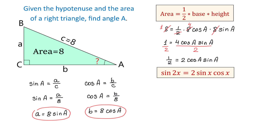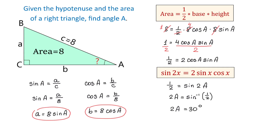Next, I will use the trigonometric identity: sine of 2A equals 2 cosine of A times sine of A. According to this identity, I can replace the right side with sine of 2A. So then I have one-half equals sine of 2A. From here, I solve for 2A: 2A equals inverse sine of one-half. Inverse sine of one-half is 30 degrees. Dividing both sides by 2, we get A equals 15 degrees. We found angle A and the problem is completed.